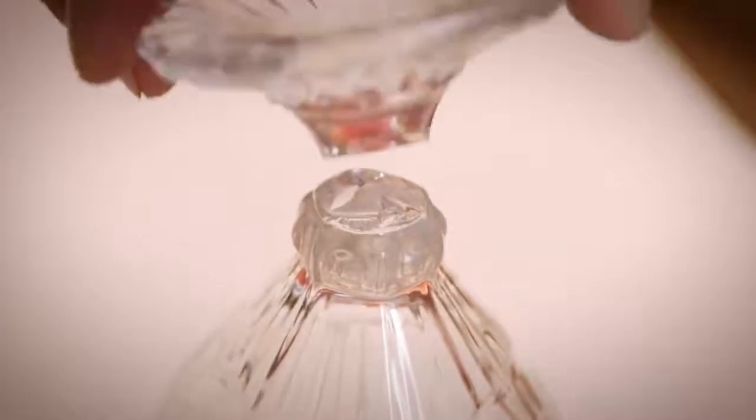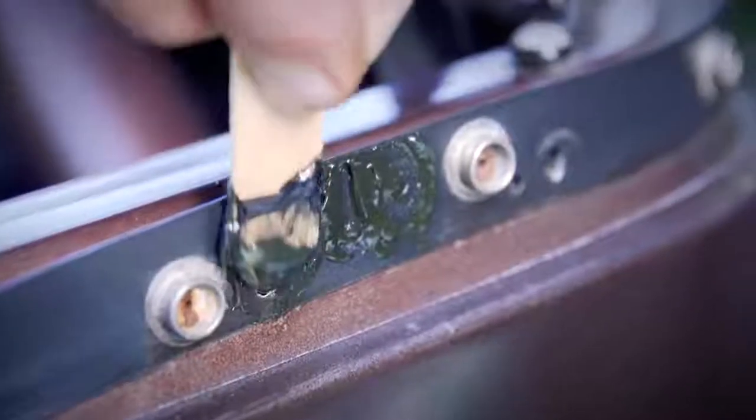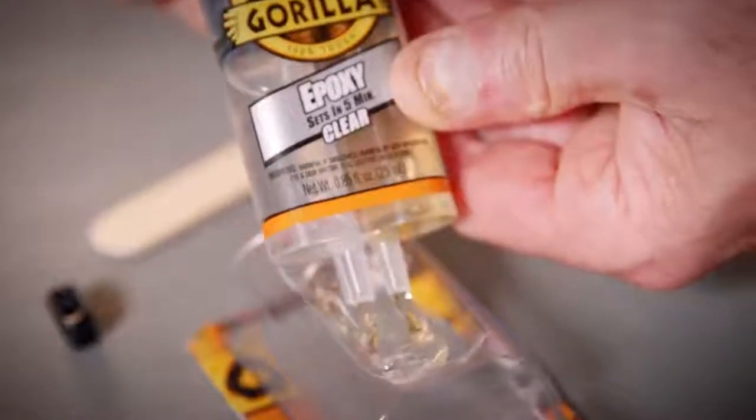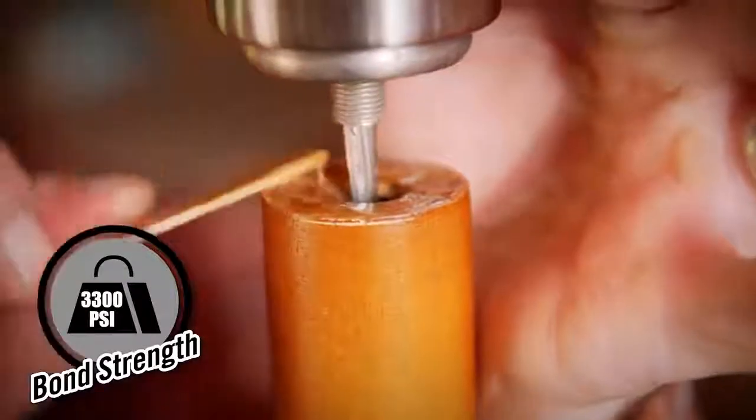Hi, I'm Kevin from Gorilla Glue, and today I'm going to show you how to use Gorilla Epoxy. Gorilla Epoxies are extremely strong two-part adhesives that are great for your tough projects. The formulas are made up of two parts, a resin and a hardener, that when combined, create a heavy duty bond.